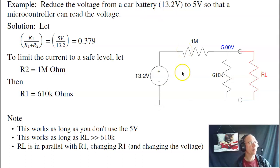As an example, suppose I had this circuit. If I wanted to find the voltage at the output, what I would do is take what I'm measuring, 610,000 ohms, divided by the total, 610k plus 1 meg. That times 13.2 volts, and you get 5 volts out.